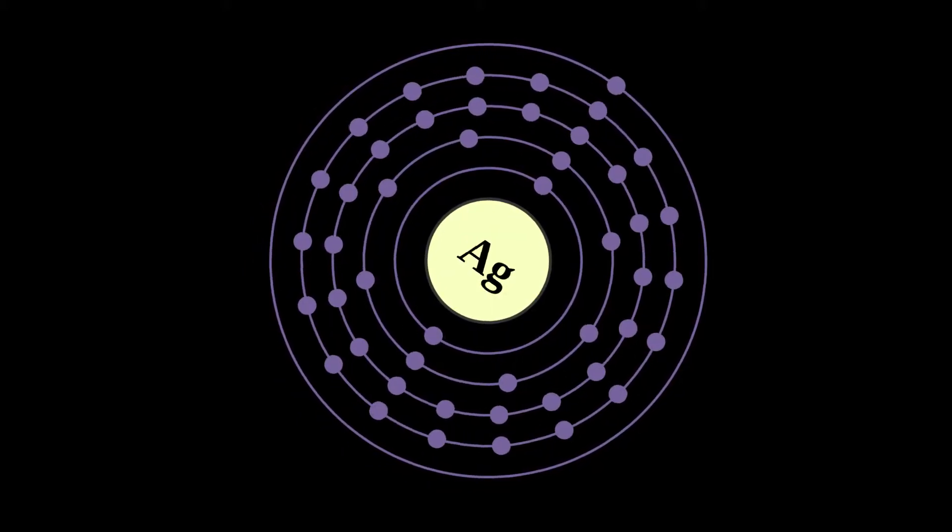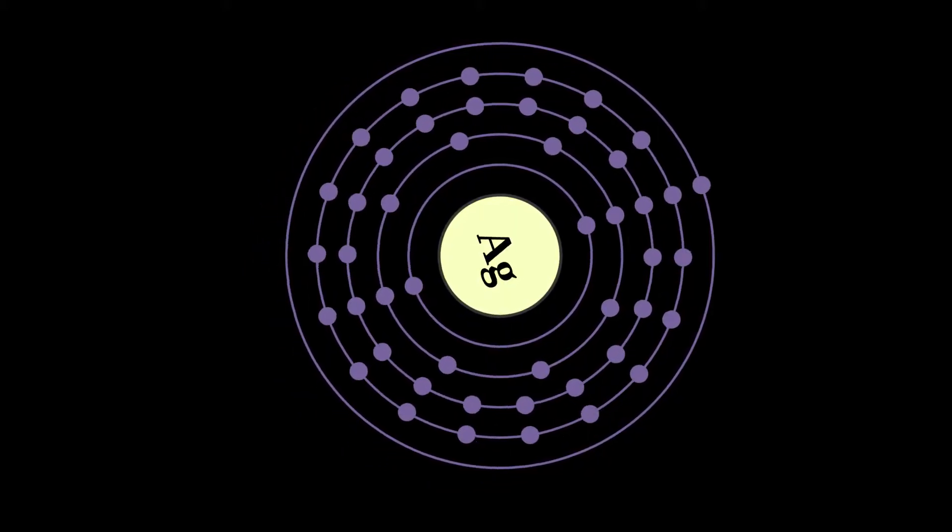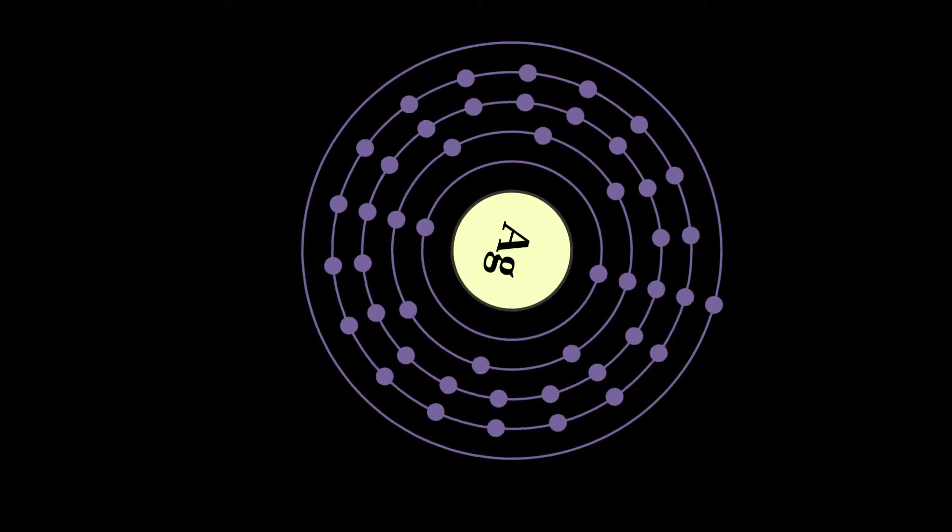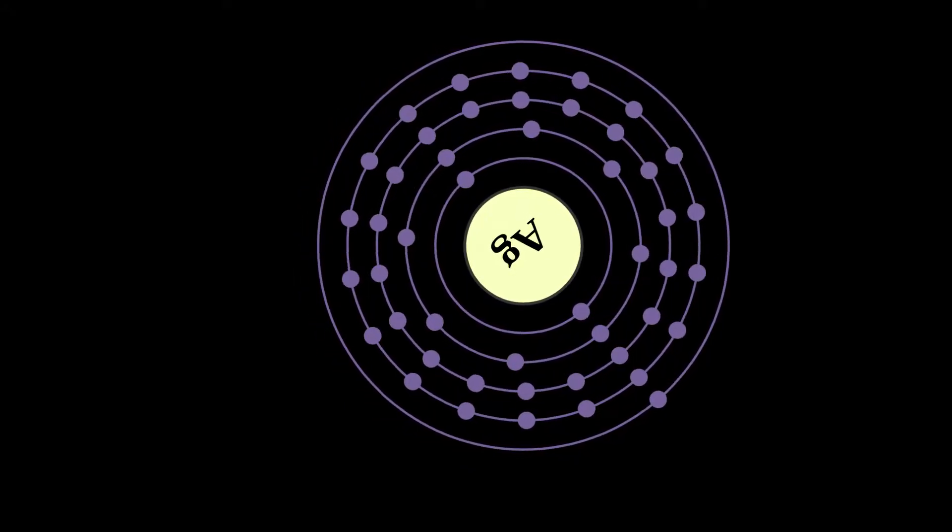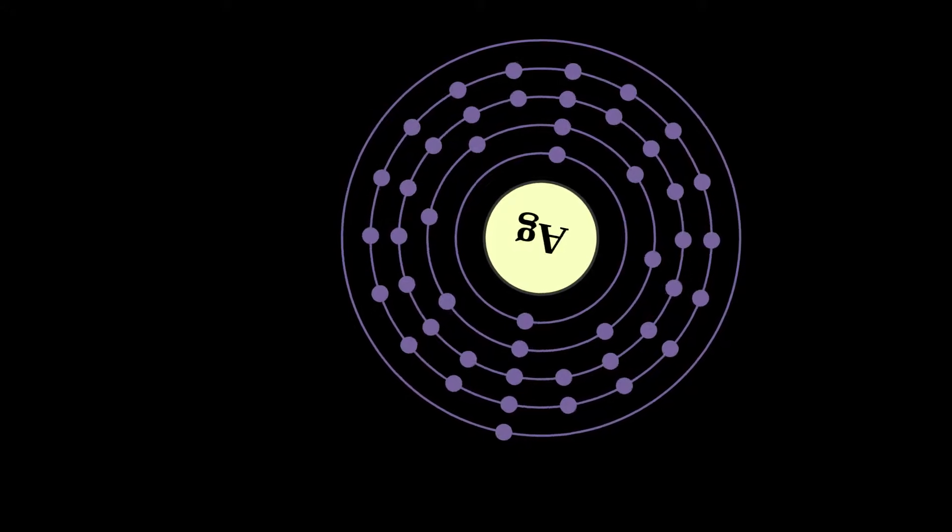Silver is a chemical element with symbol Ag, from the Latin argentum, derived from the Proto-Indo-European meaning shiny or white, and atomic number 47.